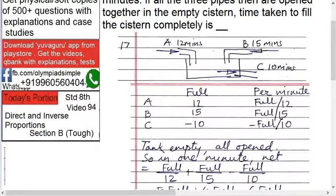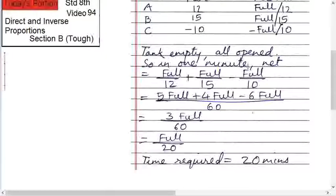Water will flow from this. Water will flow from this. And water will flow out from this. So in one minute, what will happen? In one minute, A will fill full upon 12. B, full upon 15. And C will empty full upon 10.